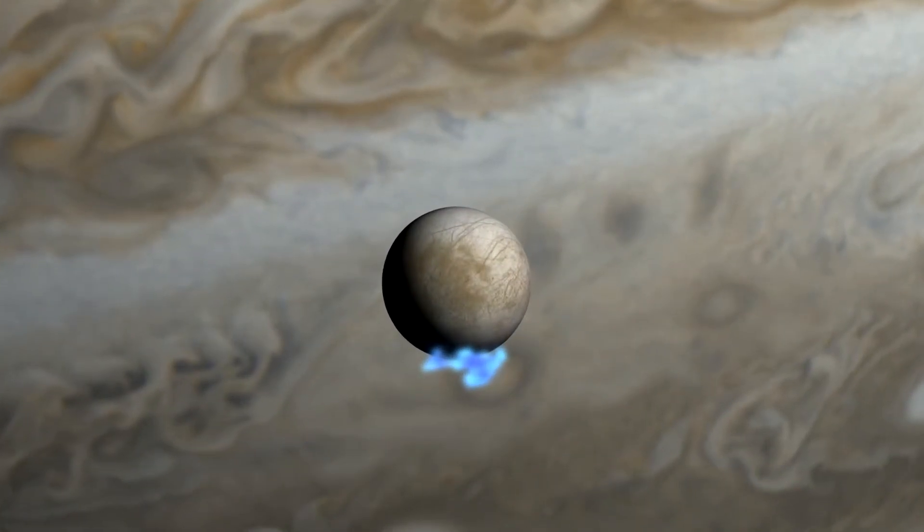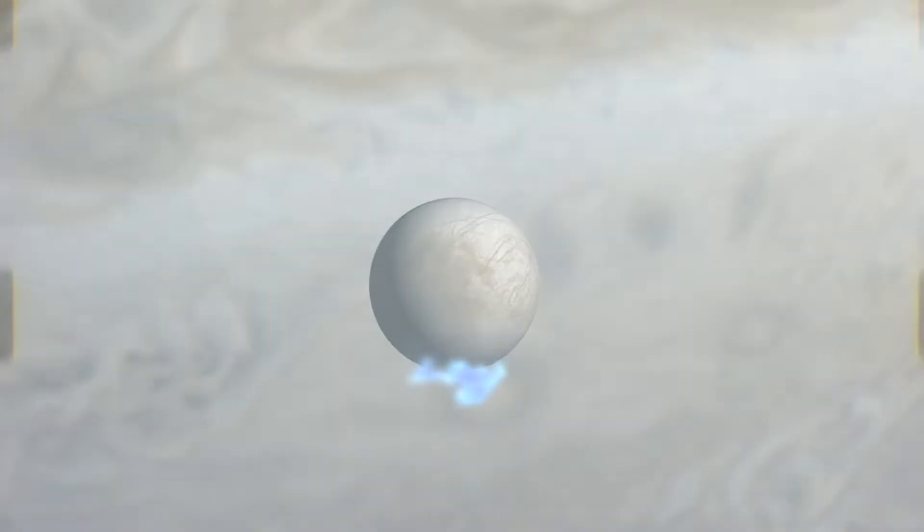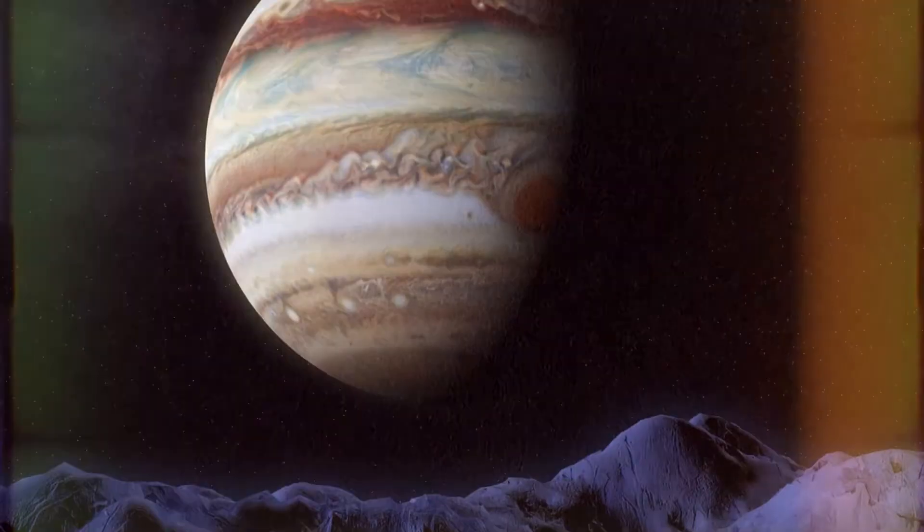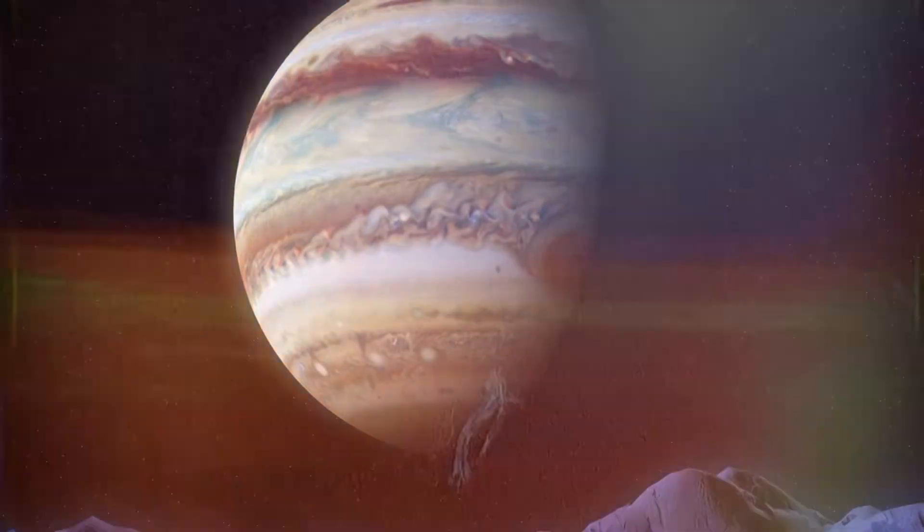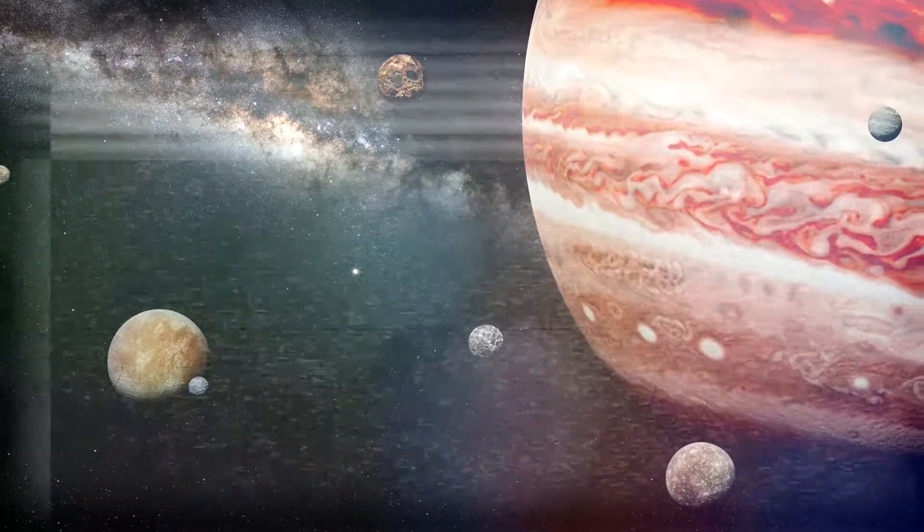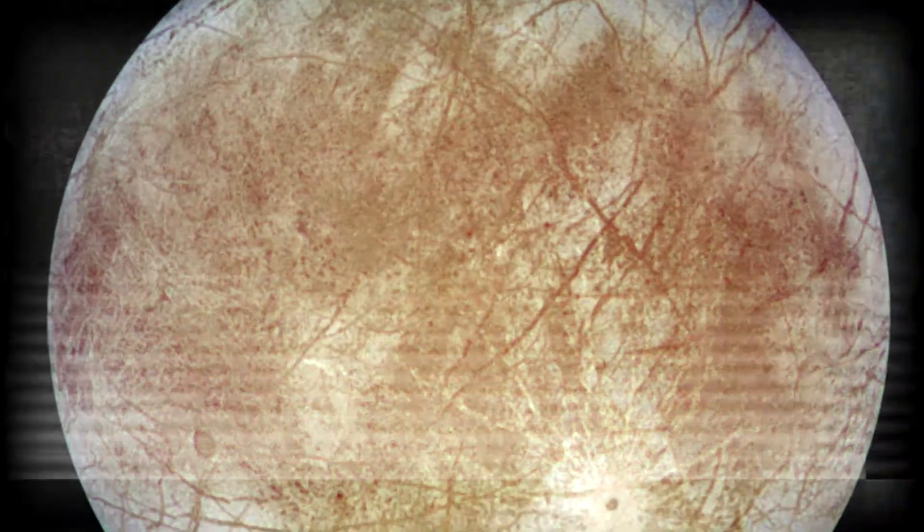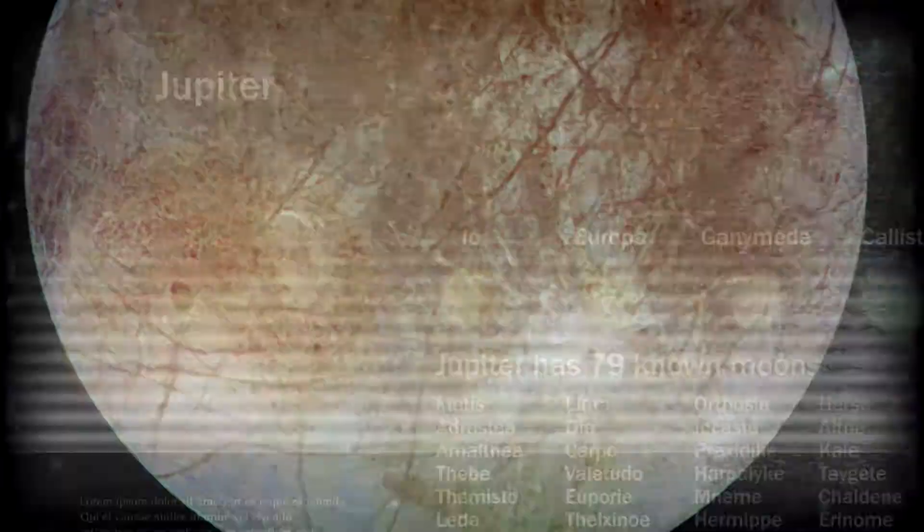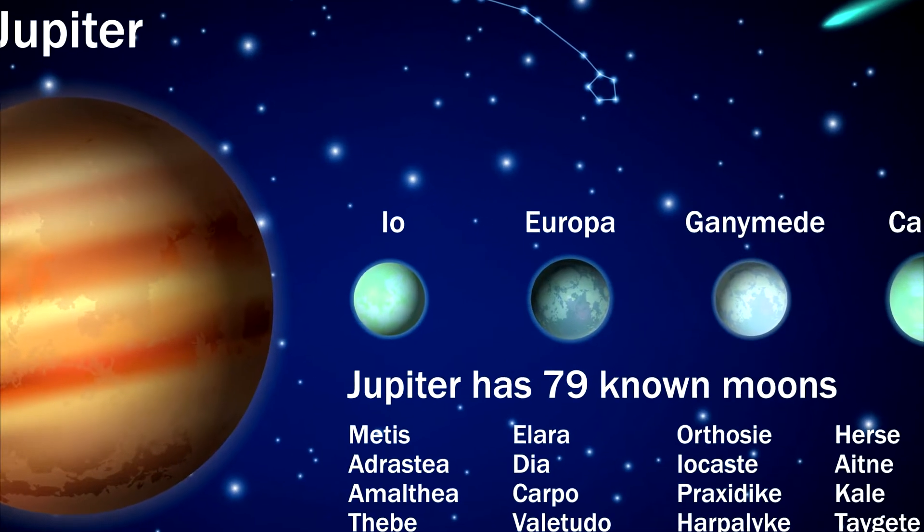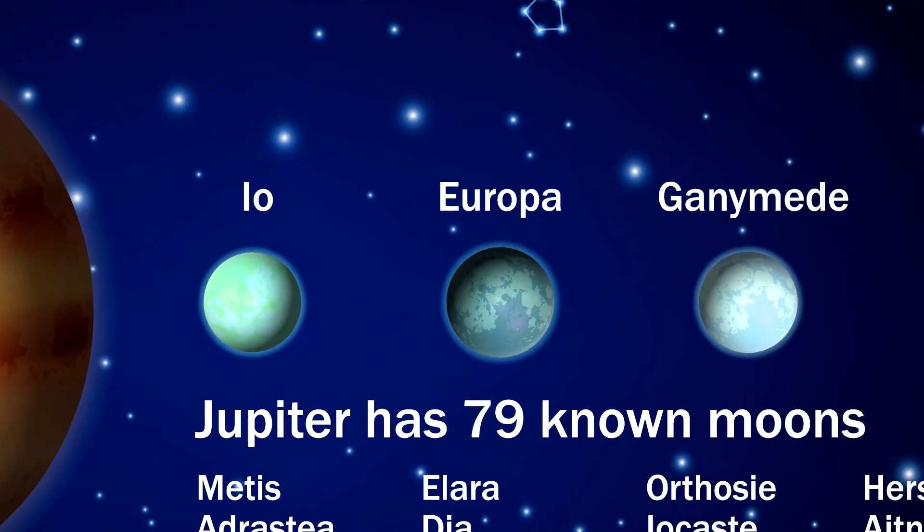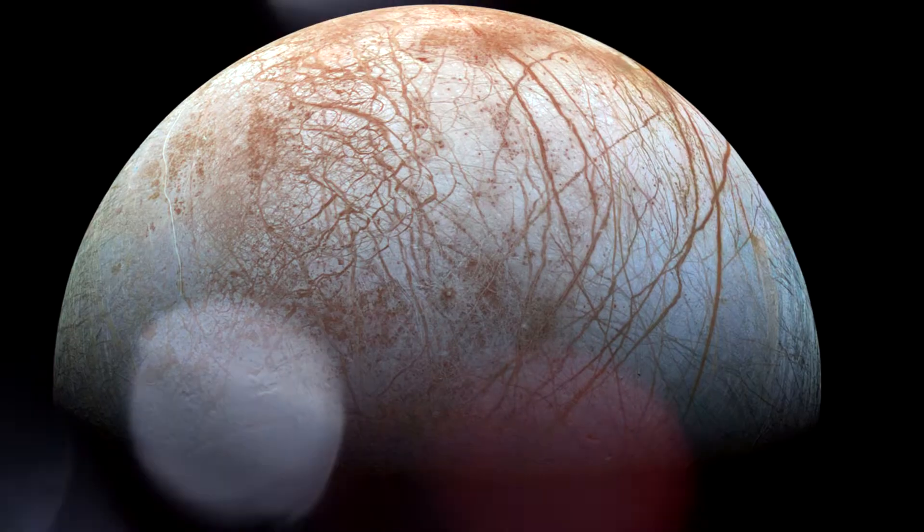This meant two things. One, Europa's surface could move and shift, not quite like our planet's tectonic plates, but similar enough. And two, there was an ocean of warmer liquid below the surface the cracked ice was sliding across. This hidden ocean could hide all sorts of mysteries within its depths, which we still don't know 40 years after its discovery. It might even hold the secret to the origins of life.